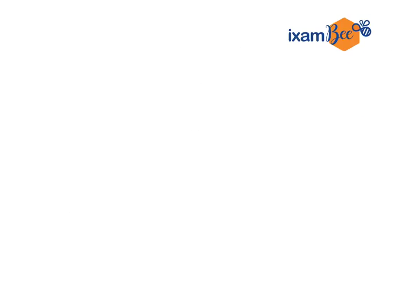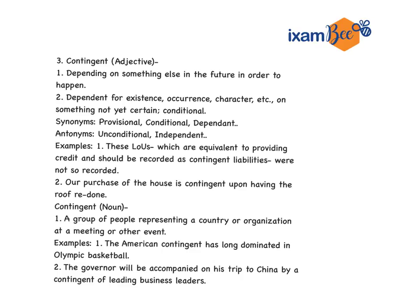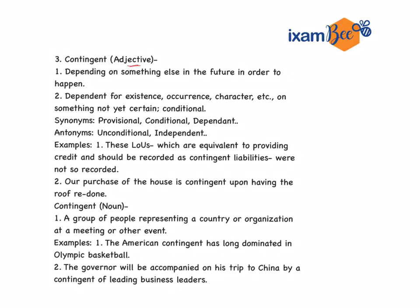The next word is contingent. It can be used as an adjective as well as a noun. In this article, it appeared as contingent liability, where contingent is an adjective. The meaning is: depending on something else in the future in order to happen. If you are talking about contingent liability, it will be based on whether something will happen or not.